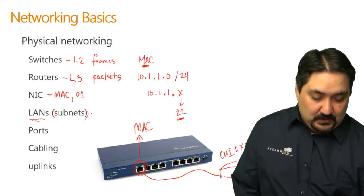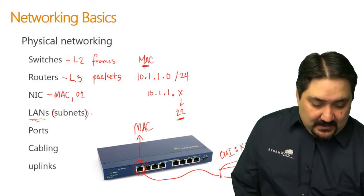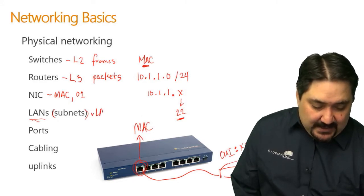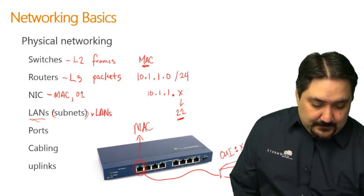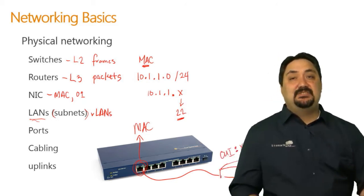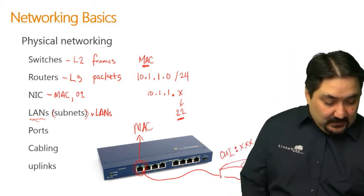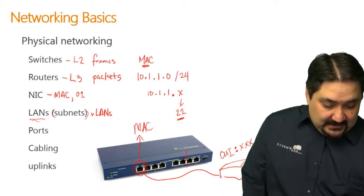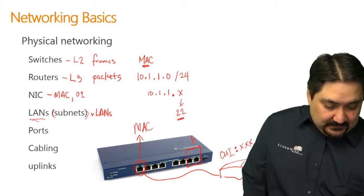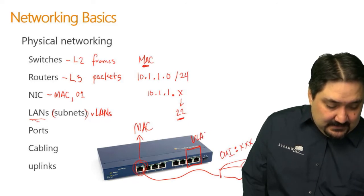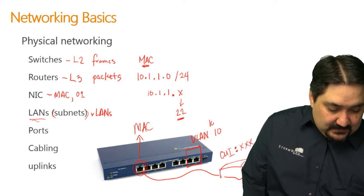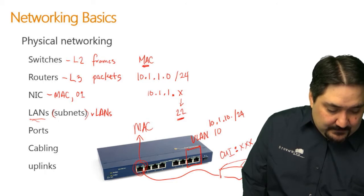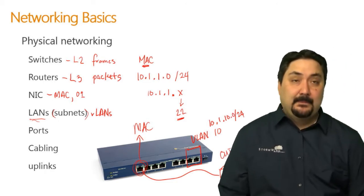LANs — our local area networks or subnets — can also be VLANs, virtual LANs, that we logically separate out on a port-by-port basis. On a switch, I could say that these two ports belong to VLAN 10, and VLAN 10 is the 10.1.10.0/24 address.